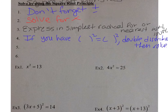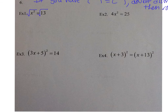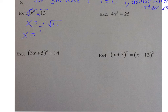First example: x squared equals 13. The x squared is isolated, so I can just square root both sides. When you take the square root of a square, they cancel, and I get x equals plus or minus the square root of 13. You cannot simplify the square root of 13 — there's no perfect square that goes into 13. To the nearest hundredth, x equals plus or minus 3.61.